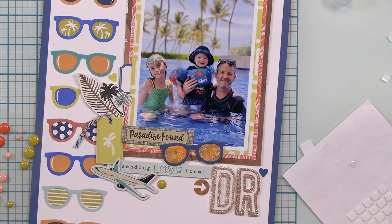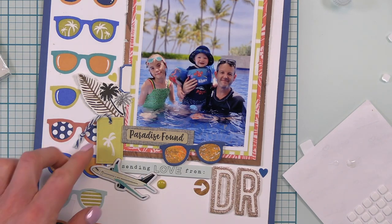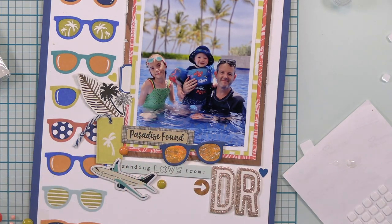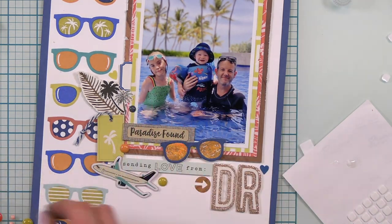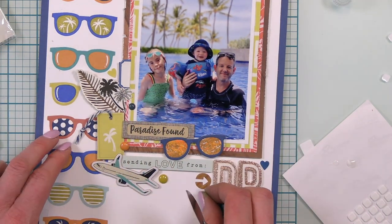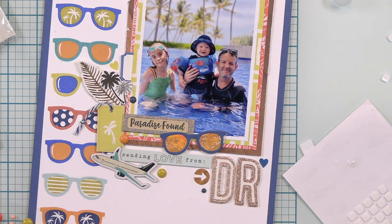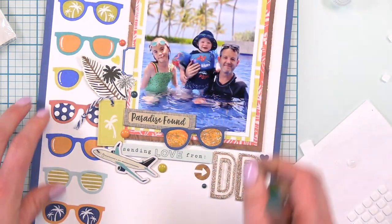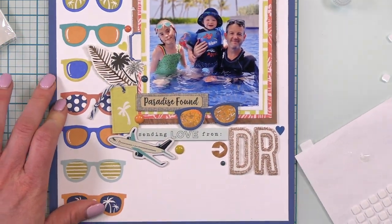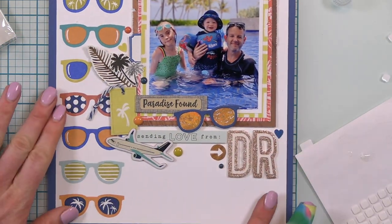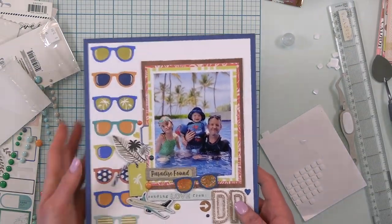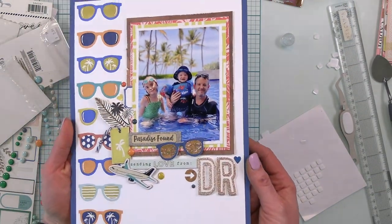Last but not least, I'm adding a few enamel dots in the colors that I stamped my sunglasses around my embellishment groupings just to get something else, another kind of texture, another shiny element on the page. I love it. Really love the way this one turned out. Cannot wait to add it to my album.